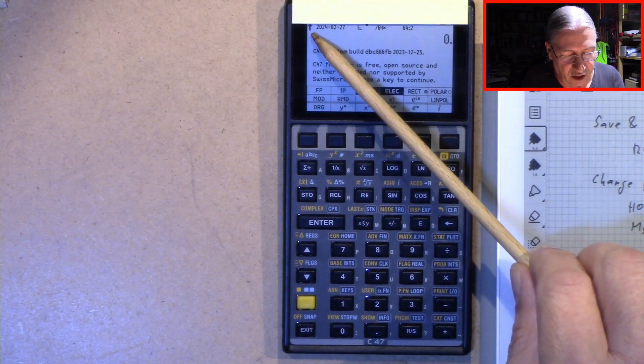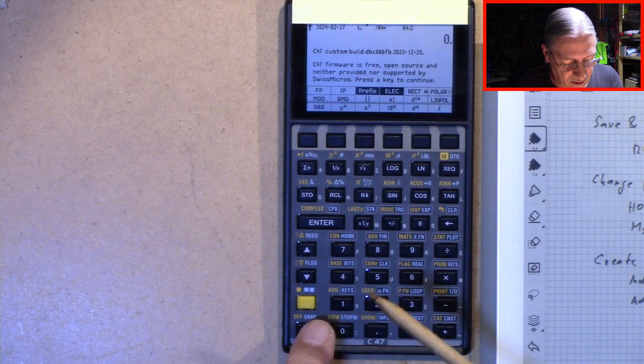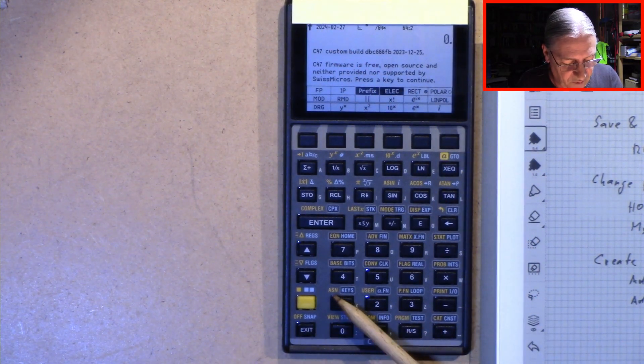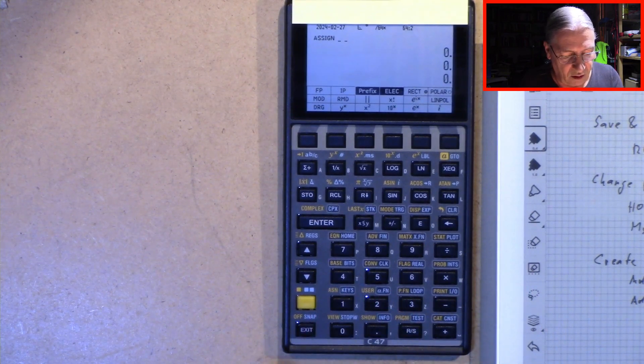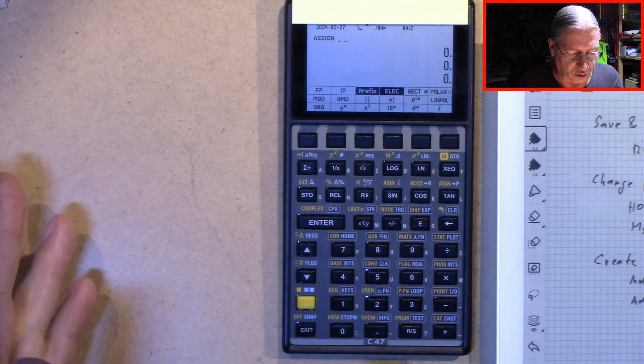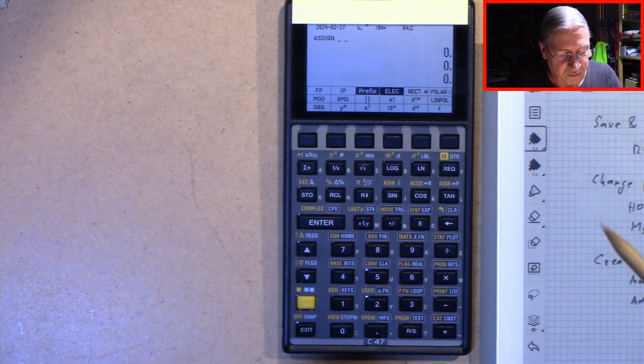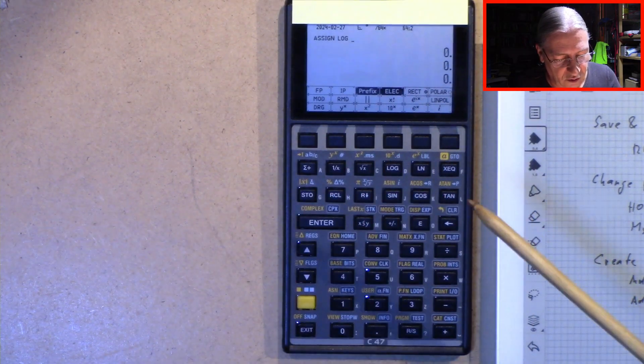So we have an F here. I hope you can see this. This is an F. And then we need assign. And now, first question: what is the thing which should be assigned to? And this is the log function. So we press log.